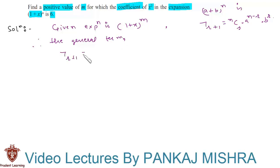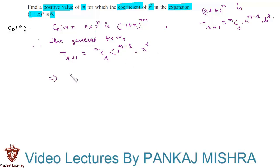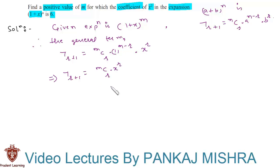Therefore, the general term for this expansion is given by T(r+1) = mCr into 1^(m-r) into x^r. Since 1 raised to anything is 1 itself, we can say T(r+1) = mCr into x^r. Now to find the value of r, we need to compare the indices of x in x² and in T(r+1).